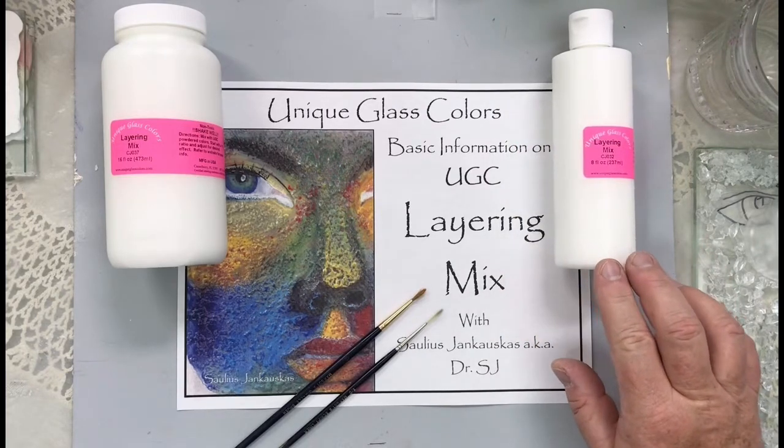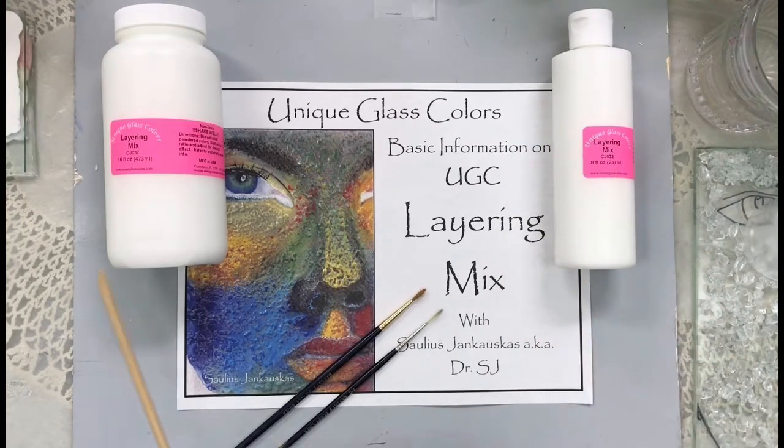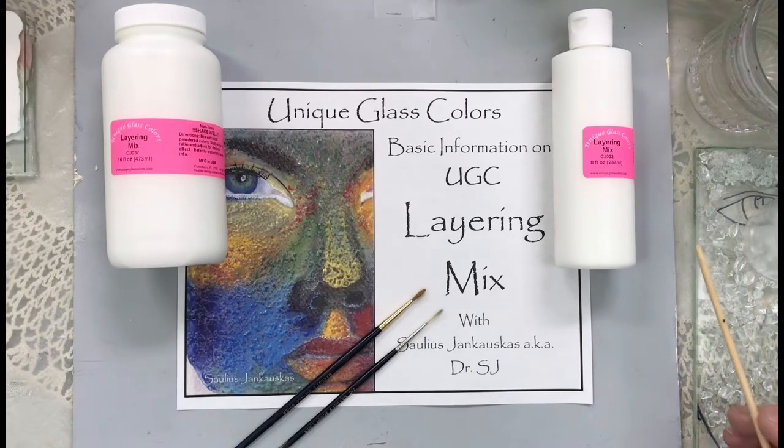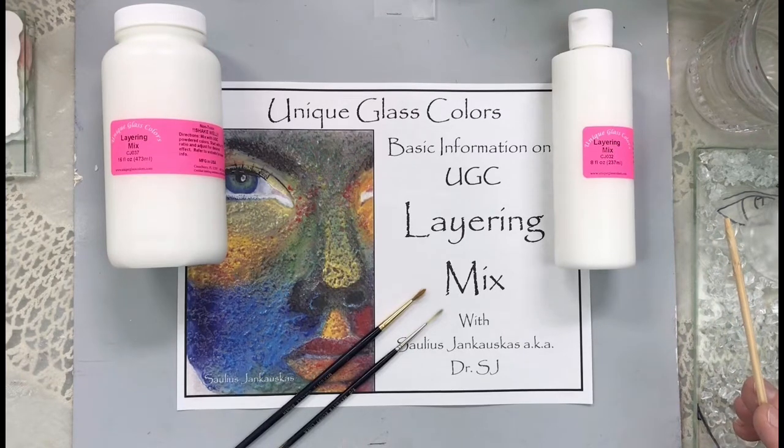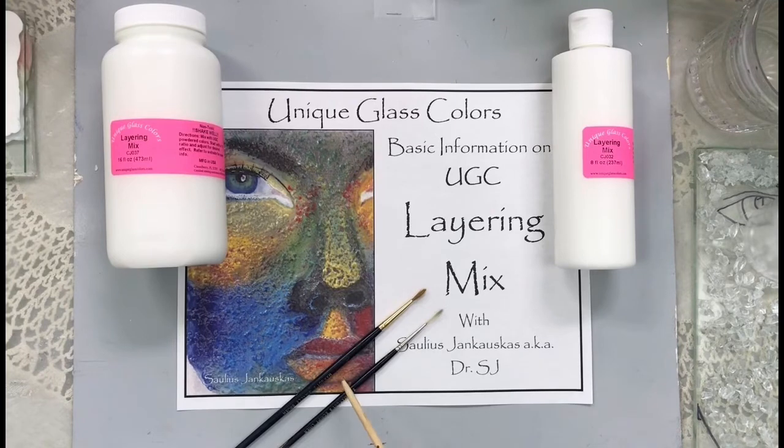As you can see, it comes in two sizes, an 8-ounce size and a 16-ounce size, also comes in gallons. I'll give you some ideas, not really techniques, but the difference between medium and the layering mix. We'll be using Margo's Miracle Brush and Margo's Script 5.0 Liner for application of some of the enamels, and here we go.